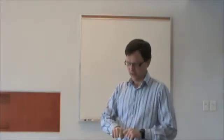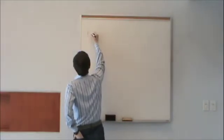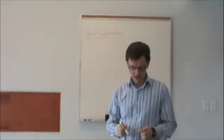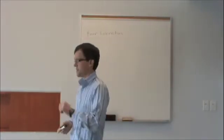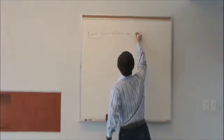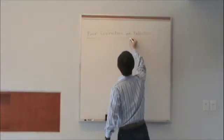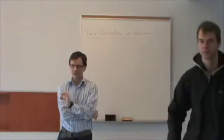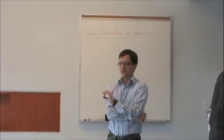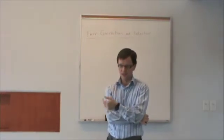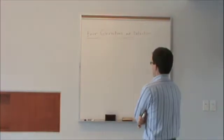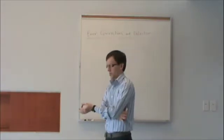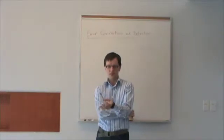Today we're going to start looking at error correction. The basic idea is error correction and detection. Throughout this course we've been talking about probability of error — we transmit a modulated waveform, that waveform is demodulated, and there's some probability of error associated with that demodulation. Now what we're going to do is encode strings with some redundancy, and use that redundancy either to detect errors as they happen, or in more complicated examples, to correct those errors.